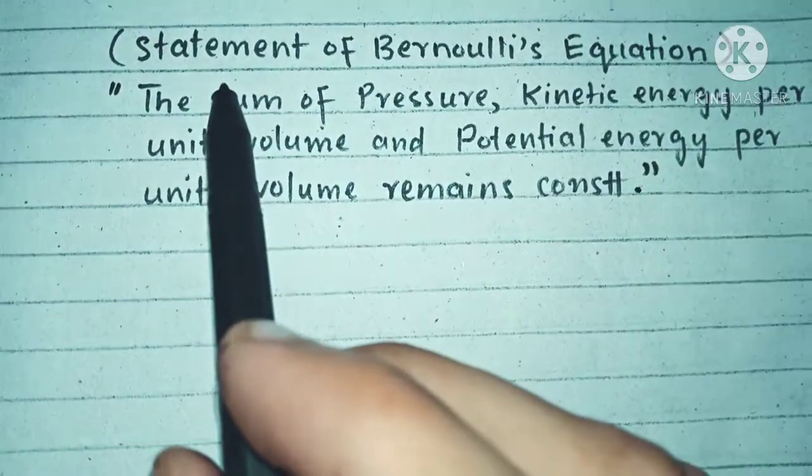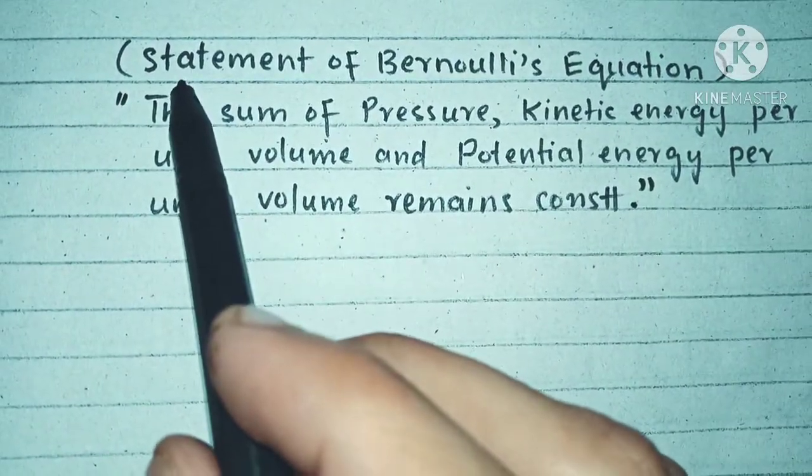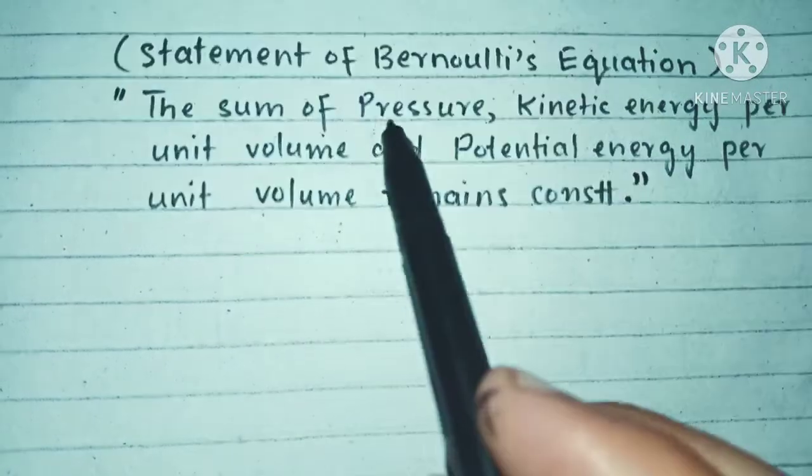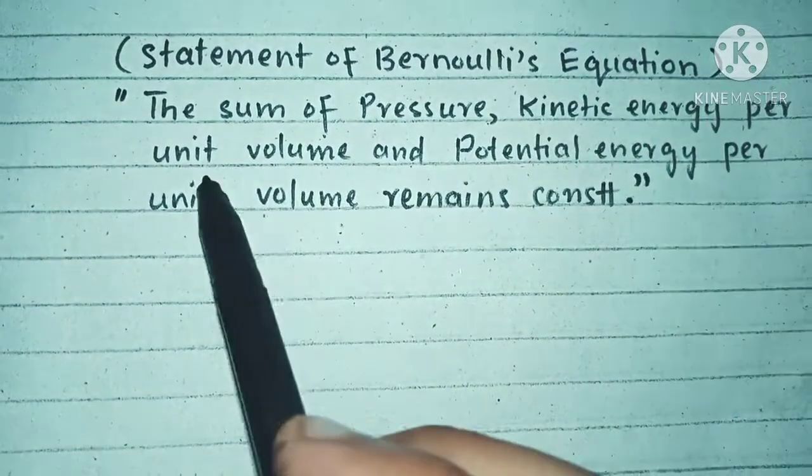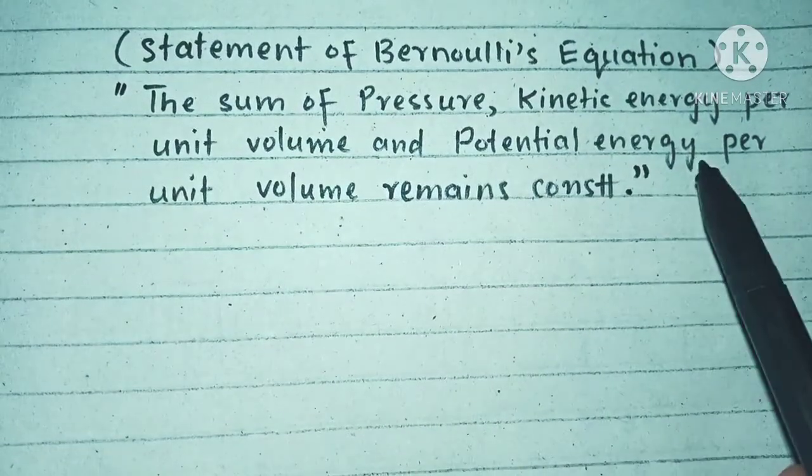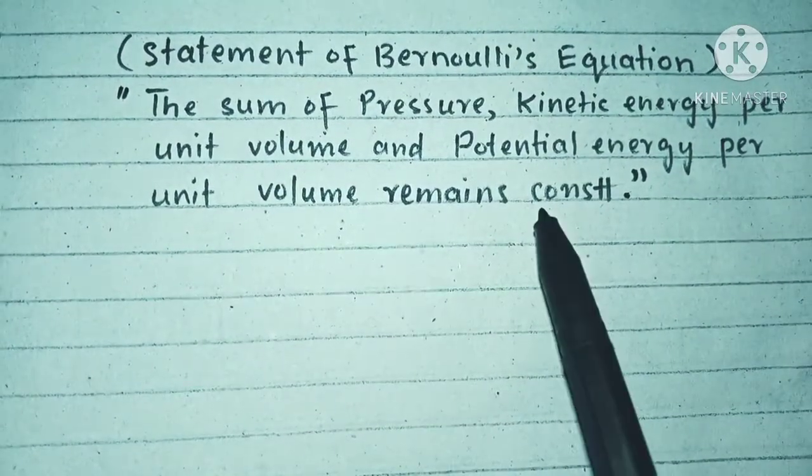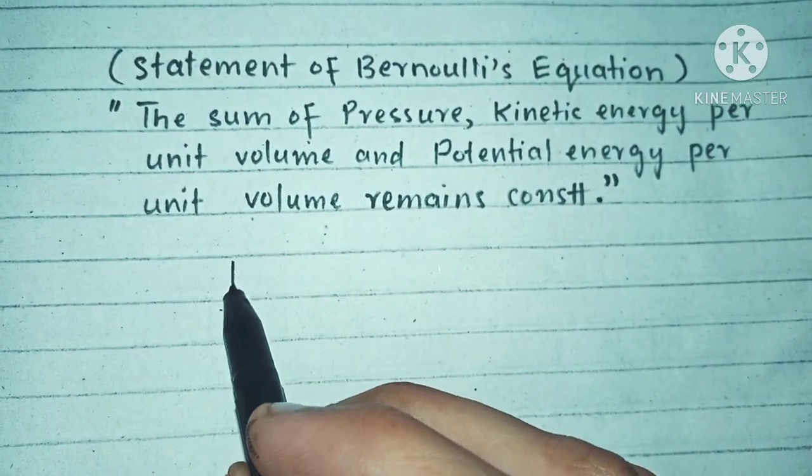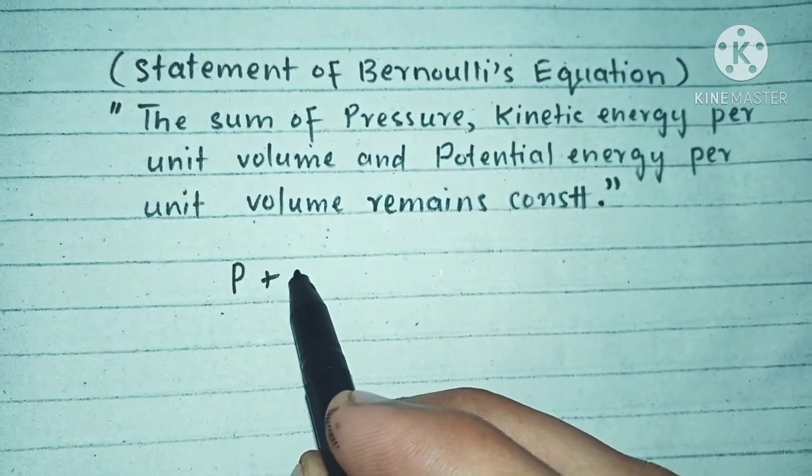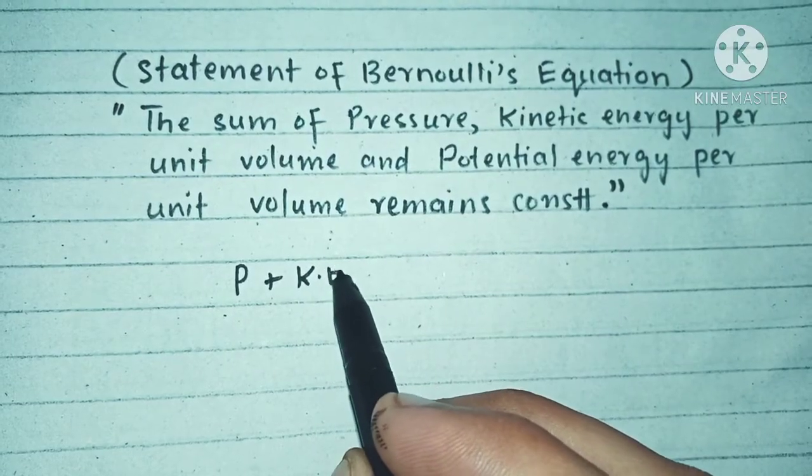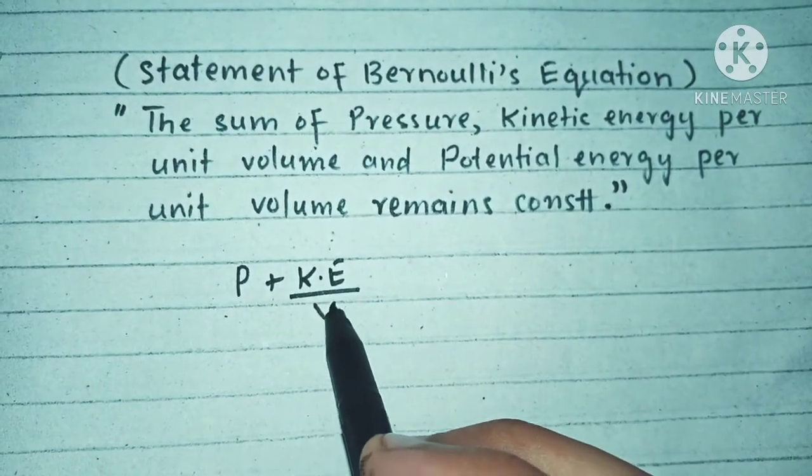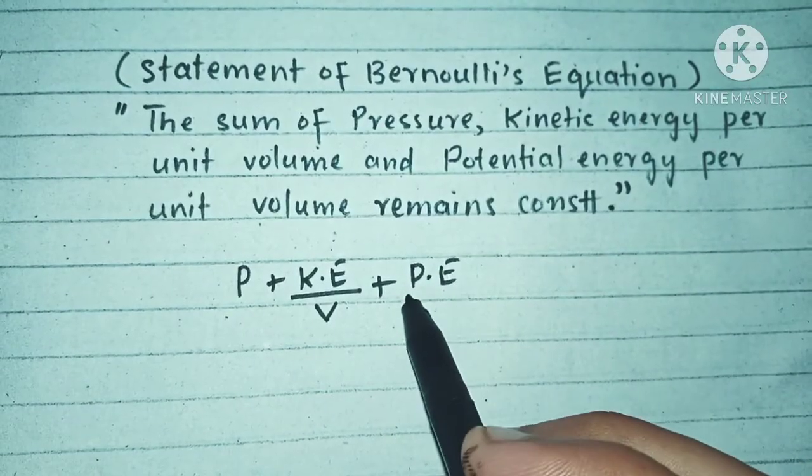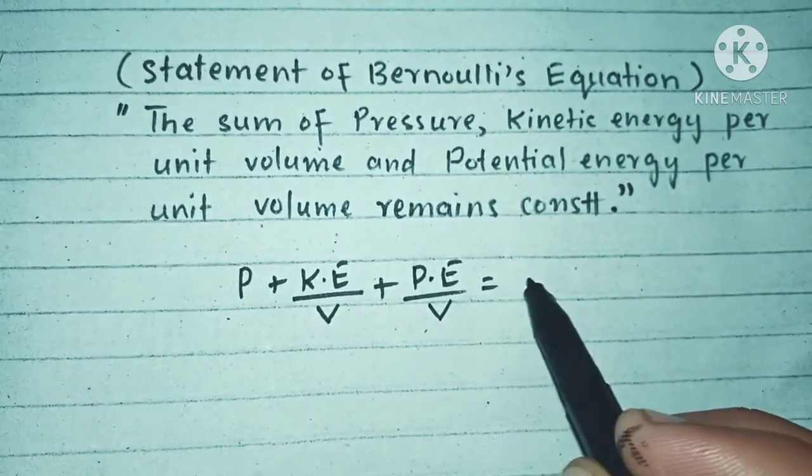Friends, so we are going to derive Bernoulli's equation. As we know, the statement of Bernoulli's equation is that the sum of pressure, kinetic energy per unit volume, and potential energy per unit volume remains constant. So can we write here as P (pressure) plus kinetic energy per unit volume plus potential energy per unit volume is equal to constant.